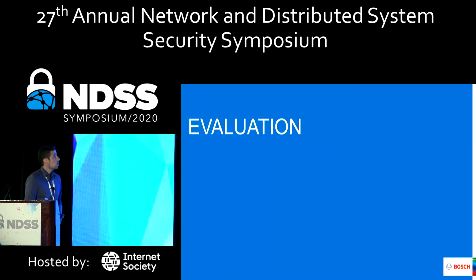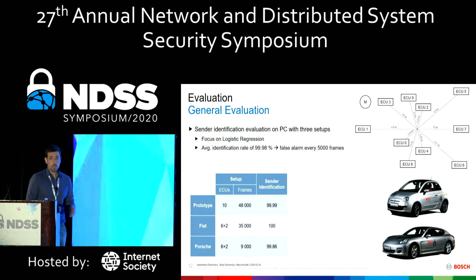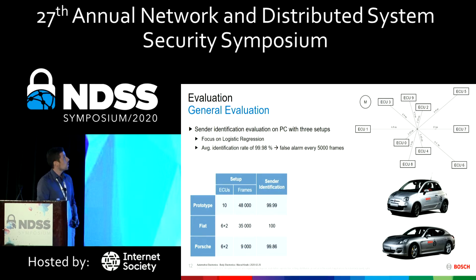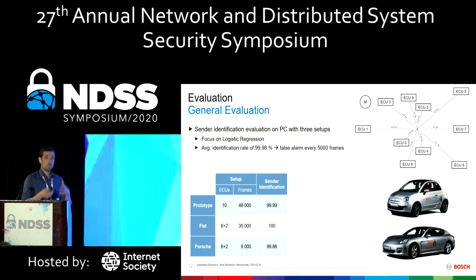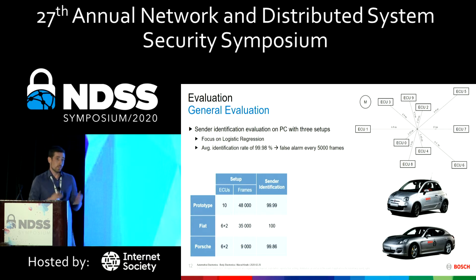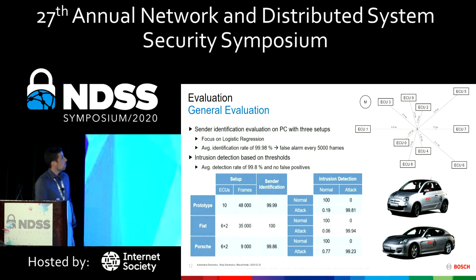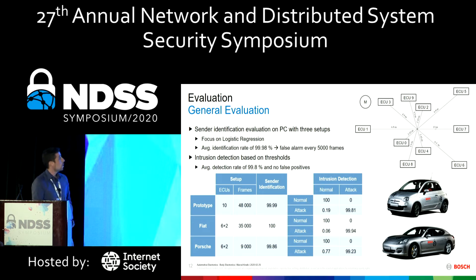For the evaluation, we first looked at how the sender verification works — what comes out of the classification step. We considered three setups: two vehicles and one prototype setup, with overall 90,000 frames recorded. We achieved an average identification rate of over 99.98%. If we used this directly as anomaly detection, we would end up with a false alarm every 5,000 frames, which — given the high load of periodically transmitted frames in in-vehicle communication — would result in one wrong alarm every five minutes. Our intrusion detection based on the dual threshold reduced false positives to zero while maintaining a high detection rate of 99.8%.